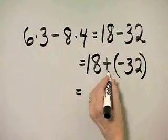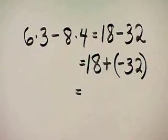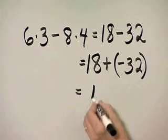And now we are adding two numbers with unlike signs. So to add two numbers with unlike signs, we subtract the absolute values. 32 minus 18 is 14.